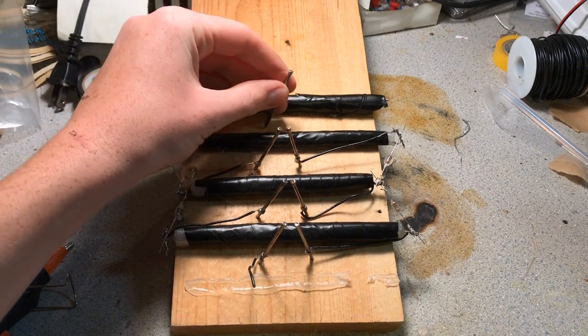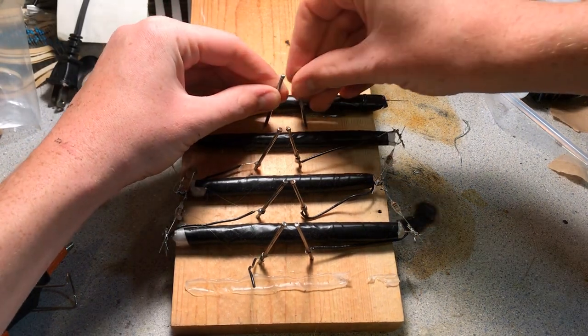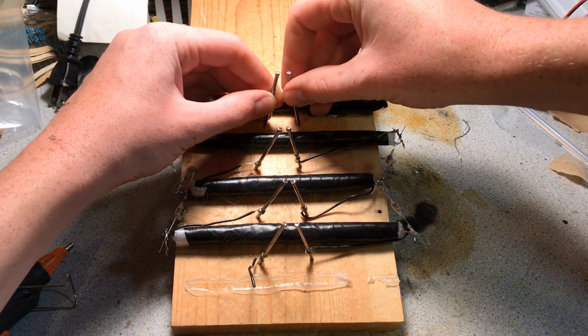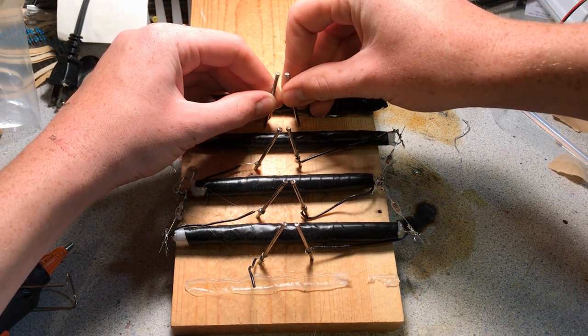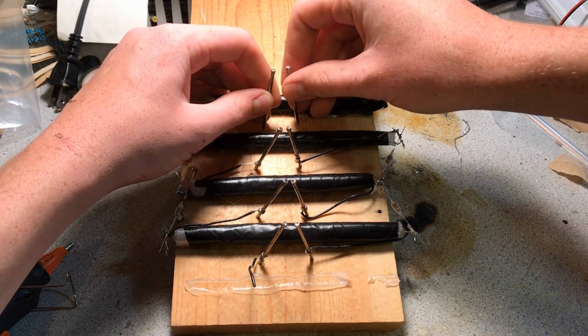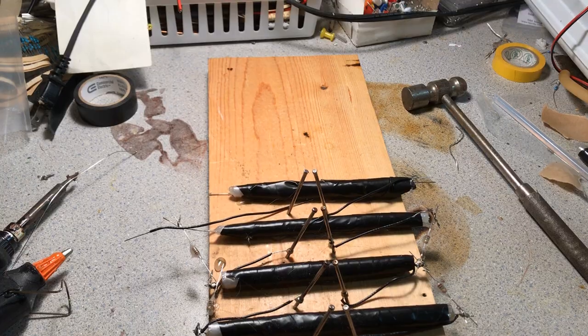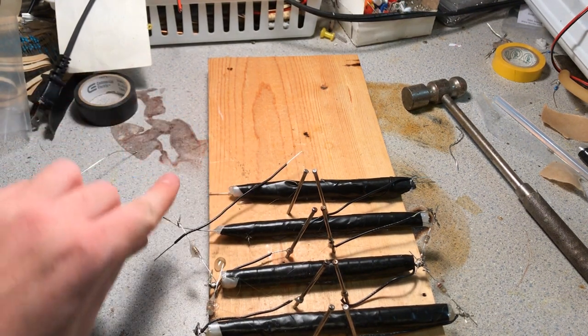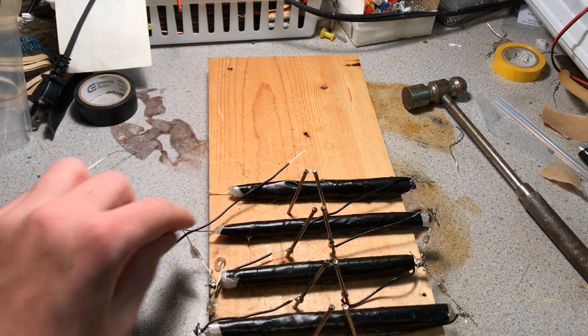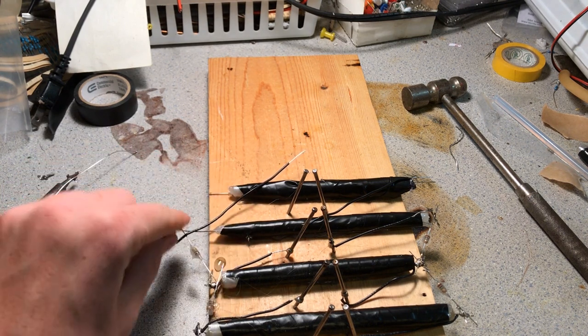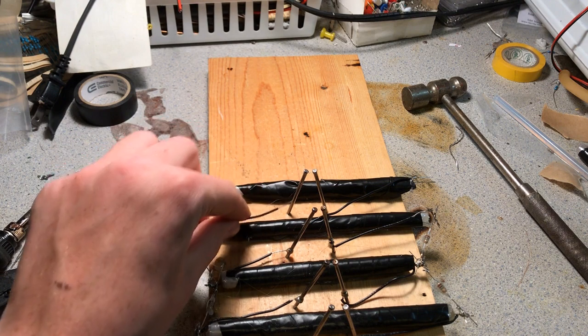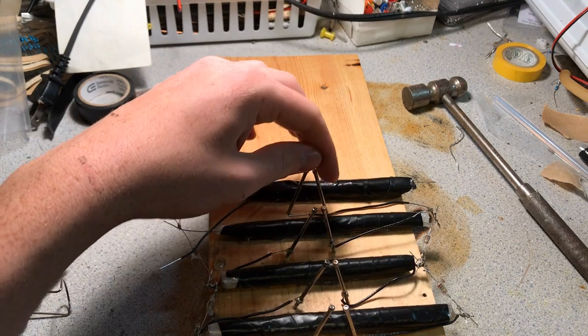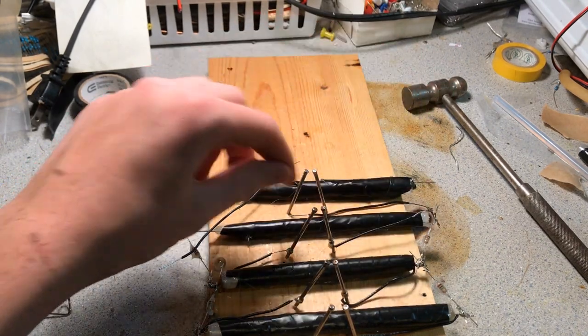Now we hammer in two nails in between the two capacitors and make sure that the spark gap between them is as small as possible while there's still an air gap. We now solder two wires, the one on the left connecting from the previous capacitor on the left side to the left side of the spark gap. The one on the right connecting from the right side of the spark gap to the new capacitor that we just placed in.